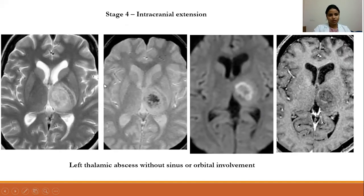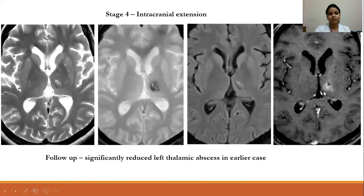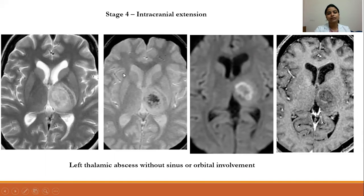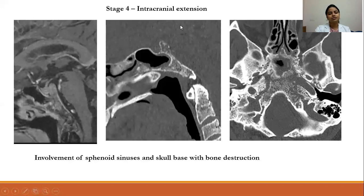Another case showed intracranial extension. The patient presented with stroke-like symptoms, specifically weakness on the right side. On T2 imaging, there was hyperintensity in the left thalamic area, which showed blooming on GRE and peripheral diffusion restriction on DWI. Mild peripheral enhancement was noted on post-contrast images. Stereotactic brain biopsy revealed an abscess that was drained, and the specimen showed elements of fungal hyphae. Post-procedure imaging showed resolution of the lesion. Another patient showed skull base involvement with the clivus and most of the middle cranial fossa involved, with heterogeneous enhancement of the clivus region on post-contrast.